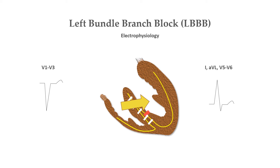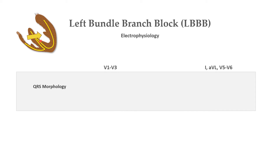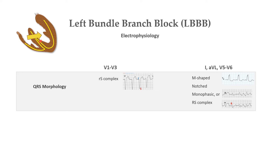The delay between activation of the right ventricle and left ventricle produces the characteristic M-shaped R wave seen in lateral leads. There is characteristic ECG QRS wave morphology in left bundle branch block. R wave in the lateral leads may be either M-shaped, notched, monophasic, or an R-S complex. And the QRS complex in V1 may be either an R-S complex — that is, small R wave with deep S wave — or a Q-S complex, that is, a deep QS wave with no R wave.